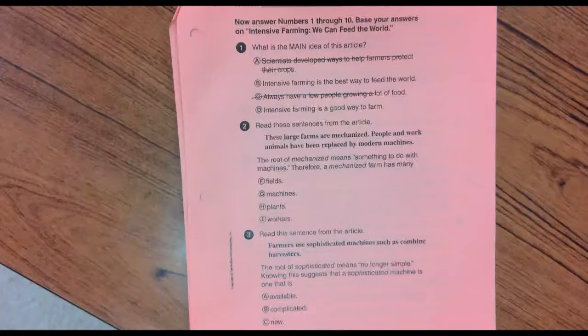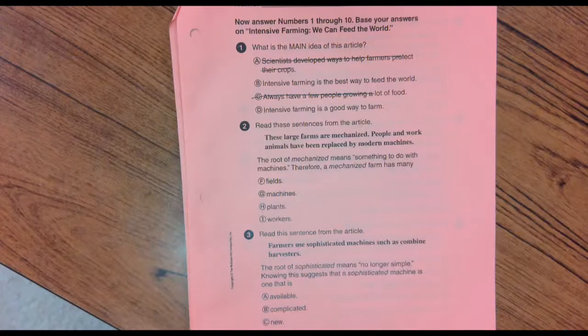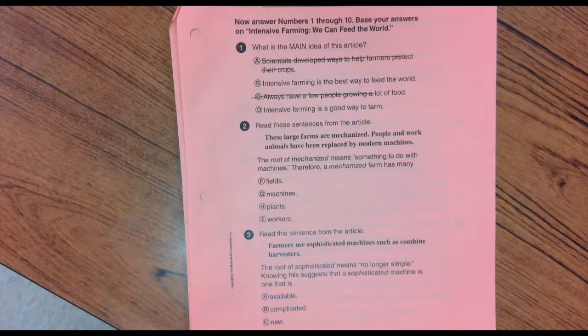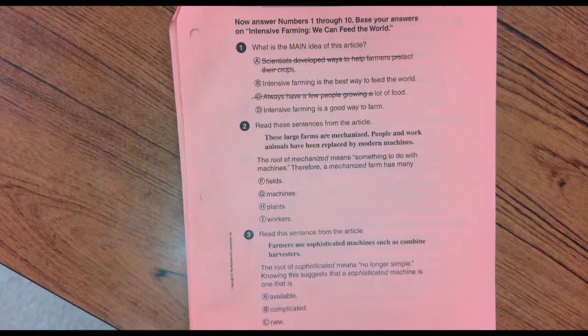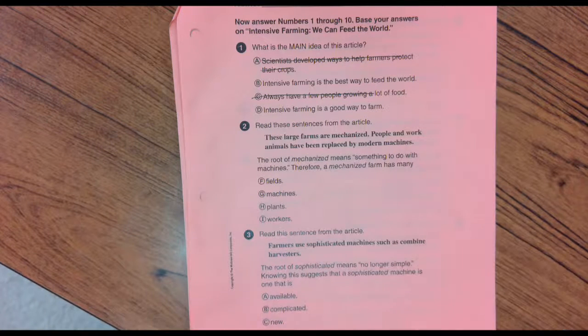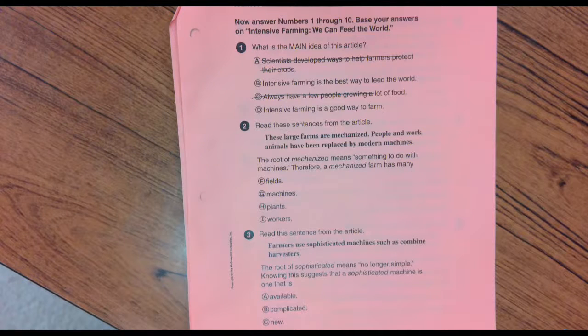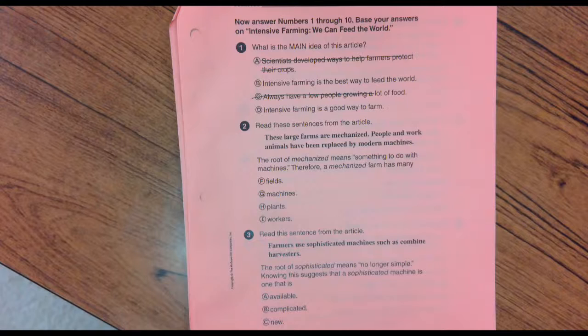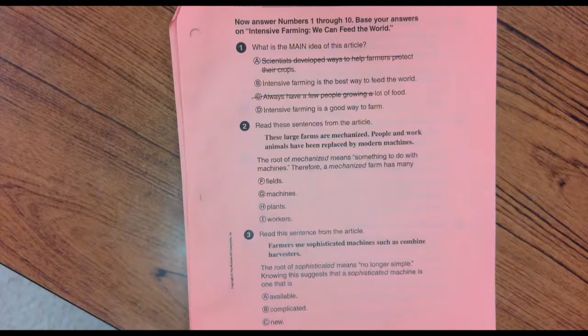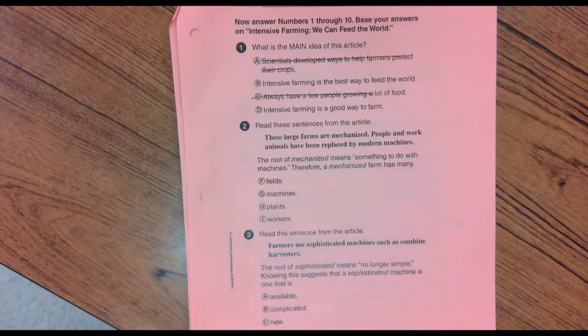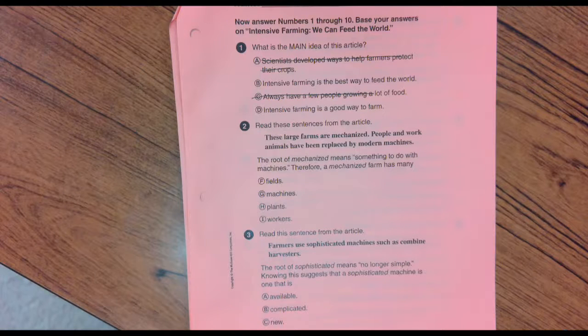Number two, read these sentences from the article. These large farms are mechanized. People and work animals have been replaced by modern machines. The root of mechanized means something to do with machines. Therefore, mechanized farms have many fields, many machines, many plants, or many workers. I know, pretty easy.